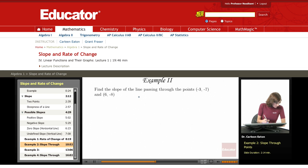Recall that the formula for slope is the change in the y-coordinates over the change in x-coordinates, or y2 minus y1 over x2 minus x1.